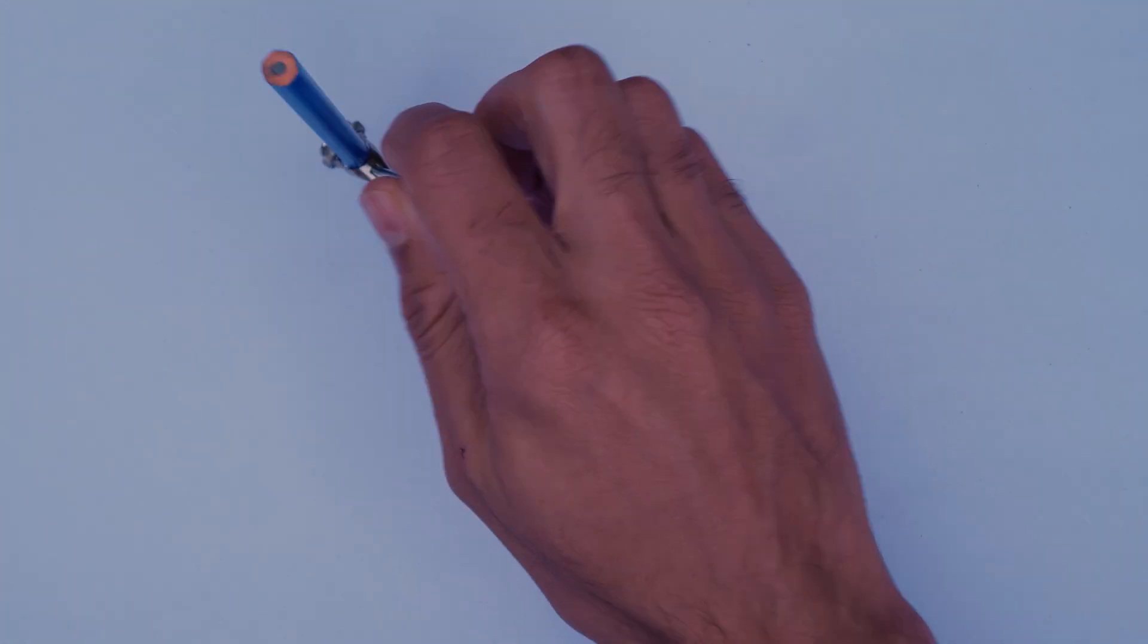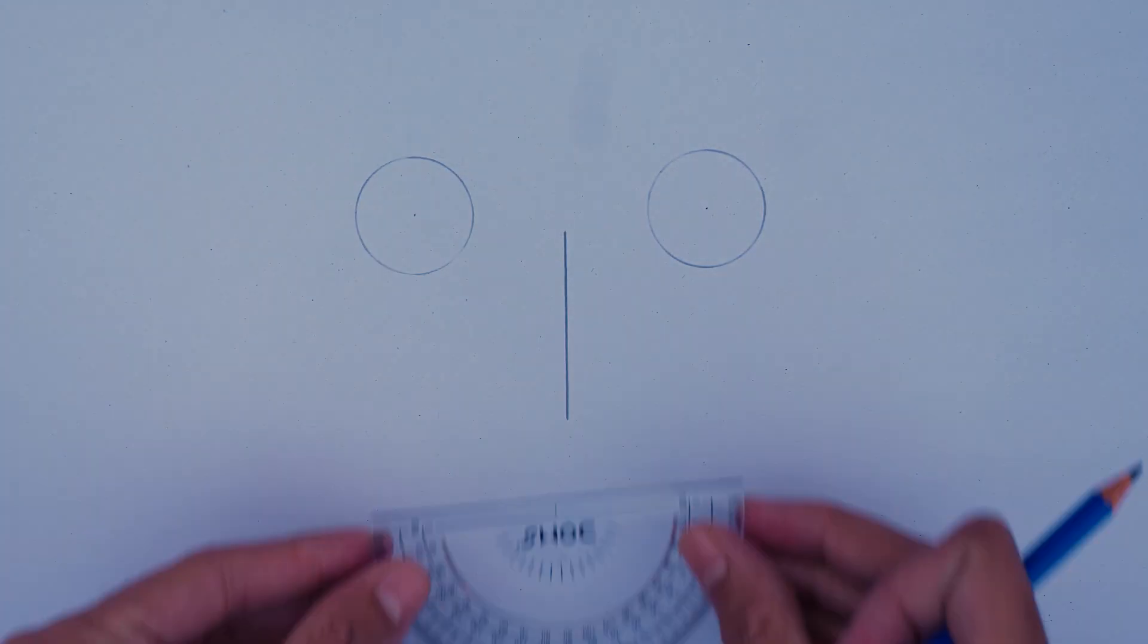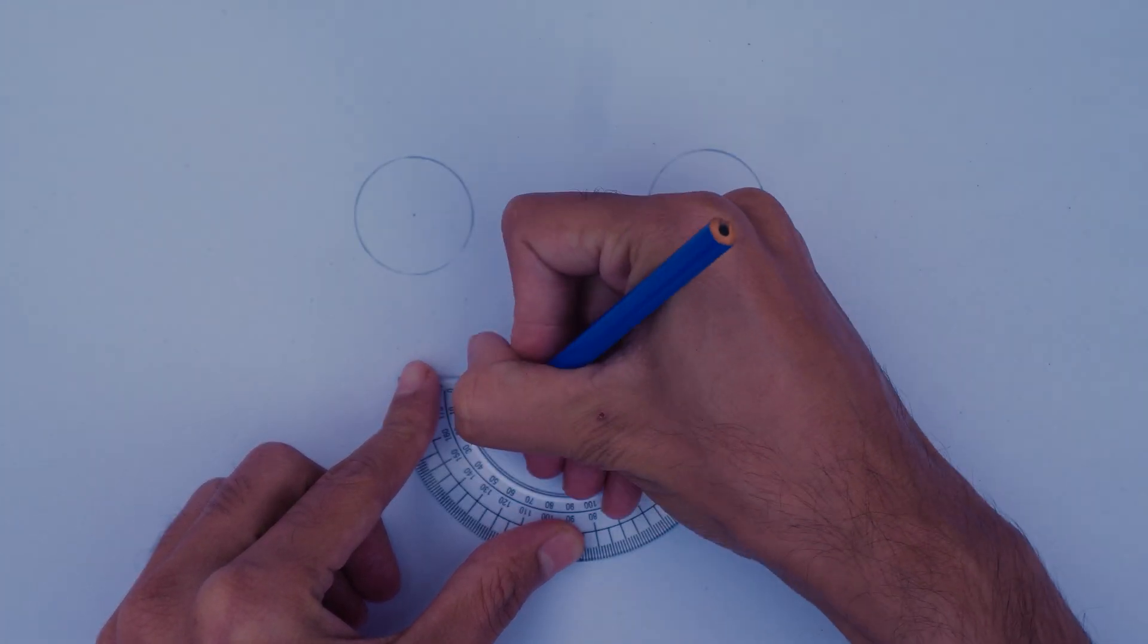Some of these things we have used most of the time, like this compass to draw circles and arcs, this ruler to draw lines, and this protractor to measure and draw angles.